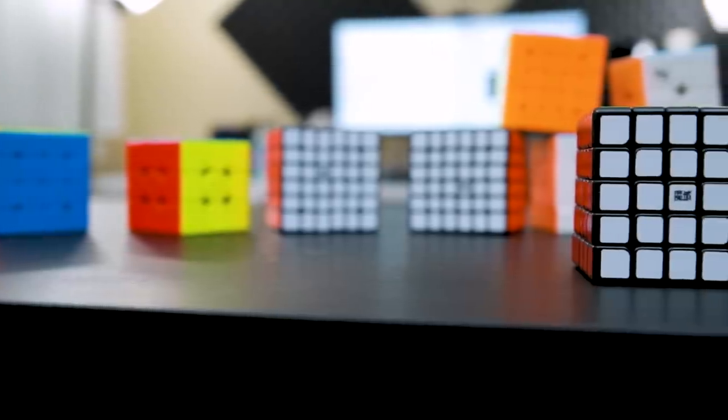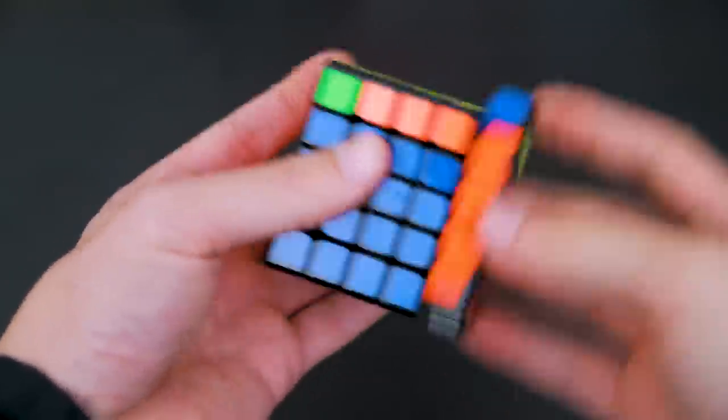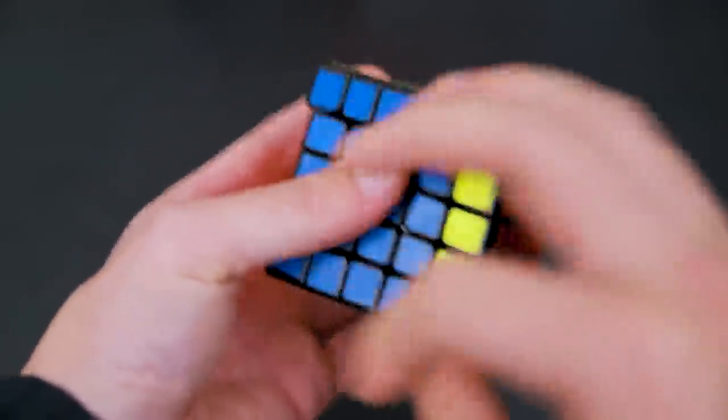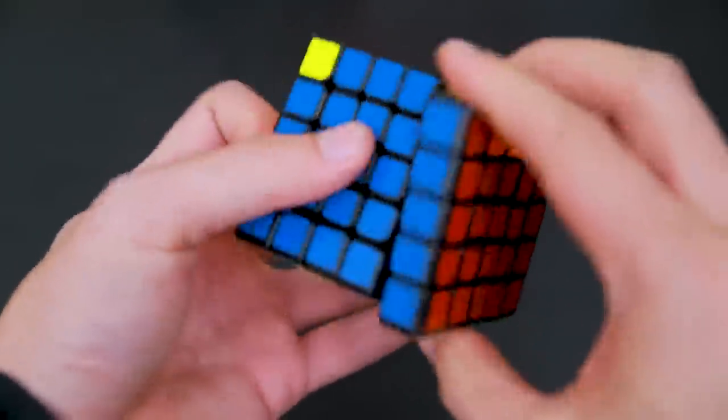Along with the Aosu GTS2M, the Moyu Aochuang GTS-M has risen in popularity in 2018. Similar to the Aosu GTS2, the factory magnetized Aochuang GTS has fantastic performance out of the box and requires far less maintenance and setup to achieve a competitively viable state.